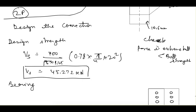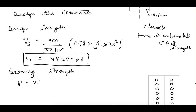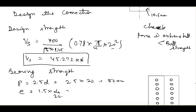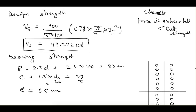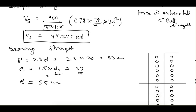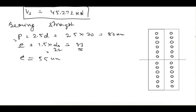For bearing strength, we need pitch and edge and end distance, which we assume on the minimum criteria. Minimum pitch p = 2.5d = 2.5 × 20 = 50 mm. End distance e = 1.5 × d_not, where d_not = 22 mm, giving e = 33 mm. Edge distance e' = 55 mm, which can be taken at or above the minimum.